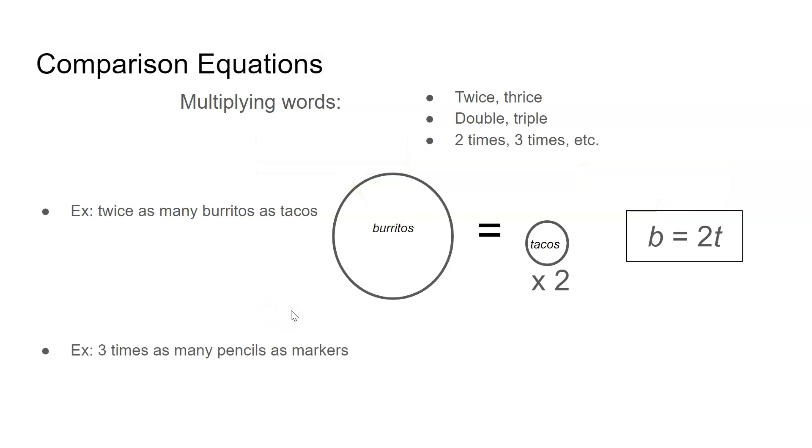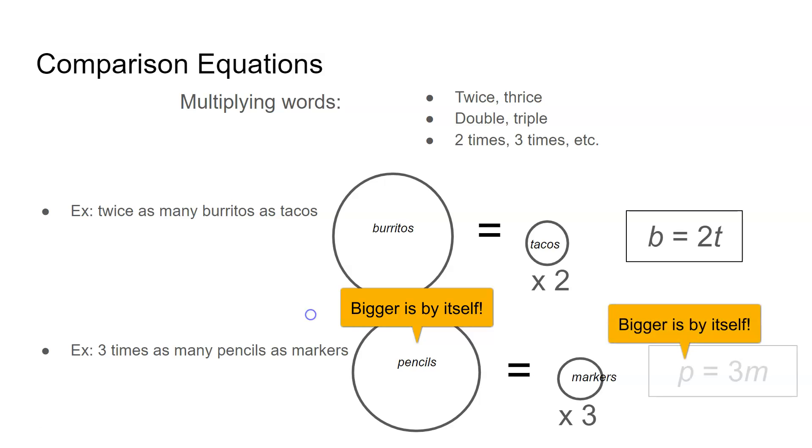What if I had three times as many pencils as markers? Pencils is again my bigger thing. So how would the markers need to grow? Markers would be growing by three. That's what they tell us in our problem. So when I put that into an equation, I have P equals three M. Again, the three is a coefficient, so it should go first.